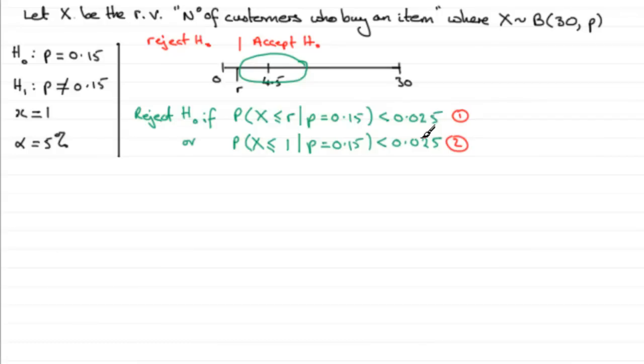I'll go through the first method and then the second one for you, and you can decide which one you'd prefer. So we'll look at method one. For method one, we'll just copy it down here: the probability that X is less than or equal to this critical value R, given that p equals 0.15.